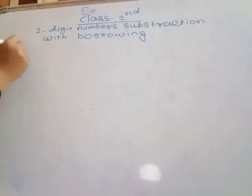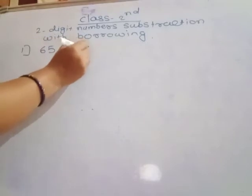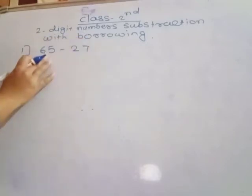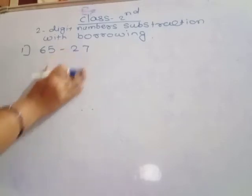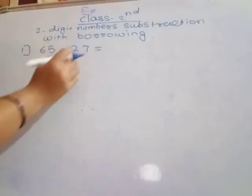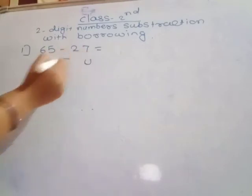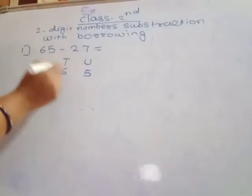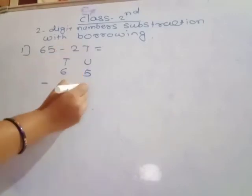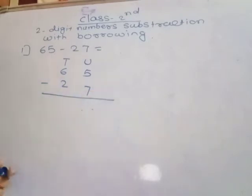See this two-digit number example: 65 minus 27. This 65 is a two-digit number, and 27 is also a two-digit number. Given horizontally, you arrange it vertically. Unit place below unit place, tens place below tens place. Here 5 and 6, minus second number: unit place 7 and tens place 2.